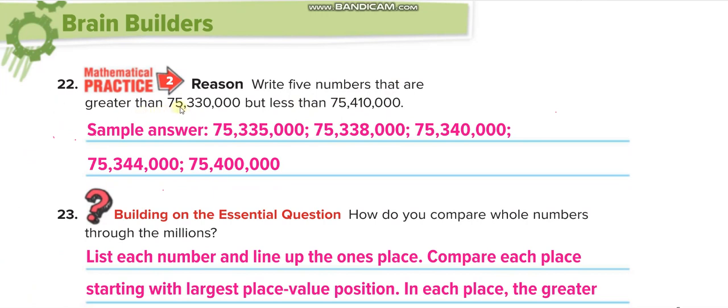Now write five numbers that are greater than 75 million 330,000. It's simple. You can write by your mind first or you can copy these ones.